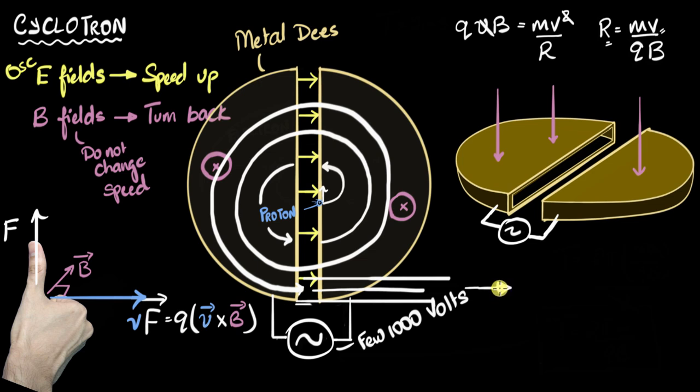And so you can immediately see that there is a limit to how much you can accelerate it. That limit depends upon how big the cyclotron is. Bigger cyclotrons, that means you can accelerate it to faster speeds. And there we have it. We've finally built our cyclotron.